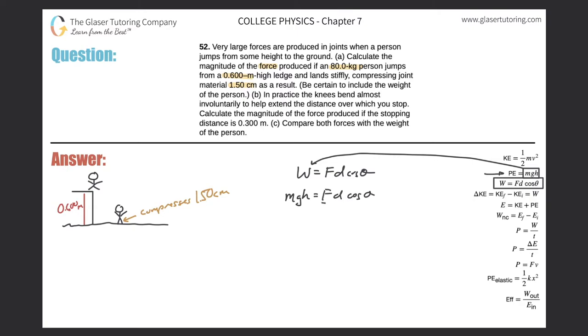So this is going to be MGH equals FD cosine of theta. Now I want to solve for the force. Let me divide out D cosine of theta from both sides. This tells me that the force will be equal to the mass of the object multiplied by gravitational acceleration multiplied by the height difference between its initial and final point, divided by the distance over which this force will be applied, multiplied by the cosine of the angle.